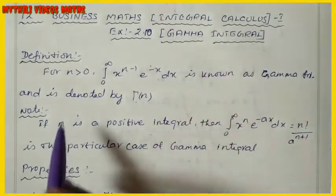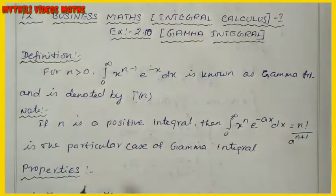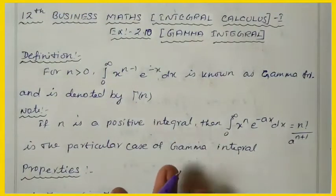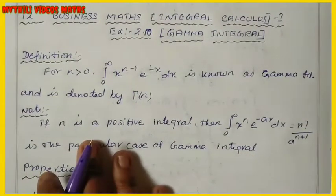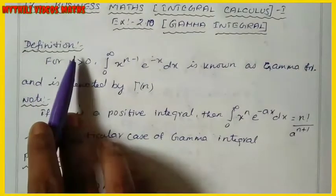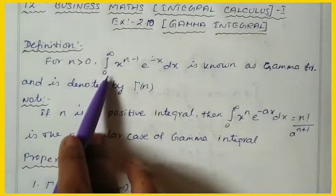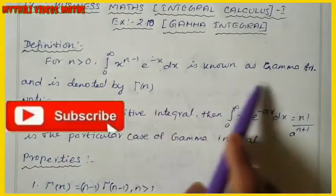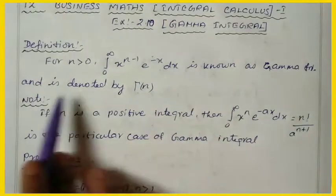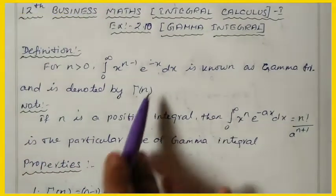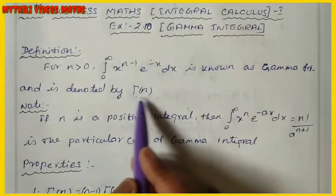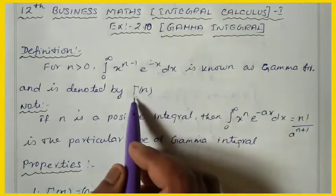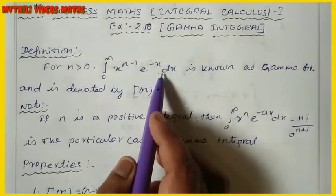The Gamma Integral — here they have given some definitions and properties. In the definition we have to do the sums. The definition: for n greater than 0, the integral from 0 to infinity of x to the power n minus 1, times e to the power minus x, dx is known as the Gamma function, denoted by Γ(n). So we write Gamma of n equal to this function.